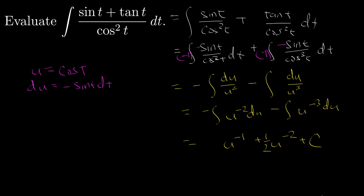so then the final answer will be equal to 1 divided by cosine t plus 1 over 2 cosine squared t plus c.